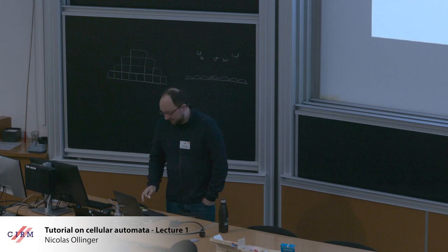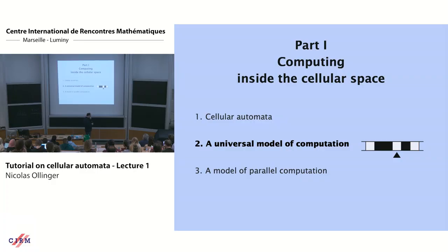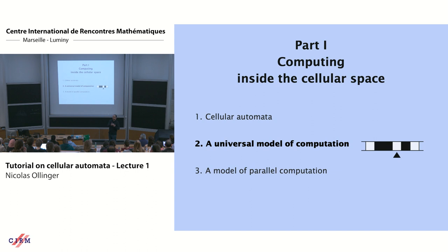Let me talk a bit about universality. I don't remember if Sylvain mentioned the universal machine. Among Turing machines, there is one that you construct in the theory of computation — you construct a machine which you call a universal machine — that is able to perform every computation given an encoding of a machine and an encoding of an input. But in that case, 'universal' is not a precisely defined notion — it's the name of one machine.